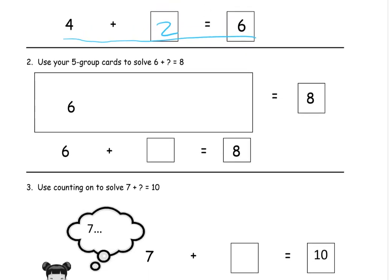And now this one says to use your 5 group cards. If you don't have them, then we're just going to draw pictures of them anyway, right? So there's the 6. So your 6 and 5 group cards, it's going to look like that on one side. And the other side is going to have 5 and 1 more, 6.